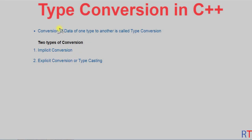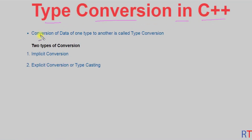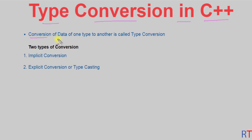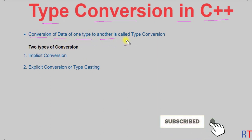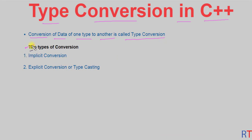In this video we're going to talk about type conversion in C++ programming. The conversion of data from one type to another is called type conversion, and there are two ways we can do the conversion: we can do it implicitly by using implicit conversion, or we can do it explicitly by using explicit conversion.